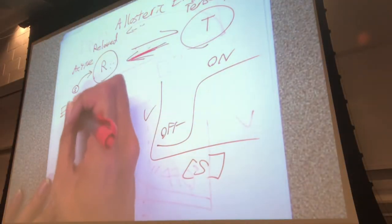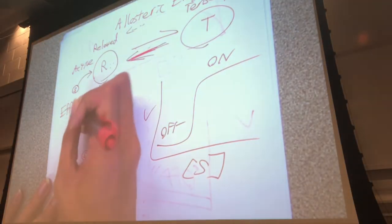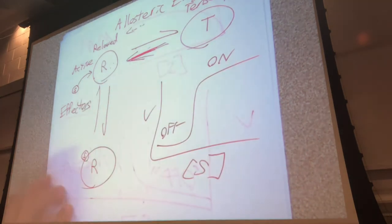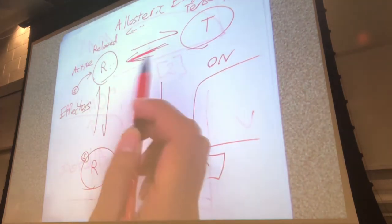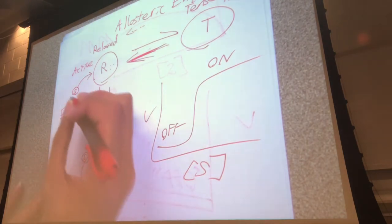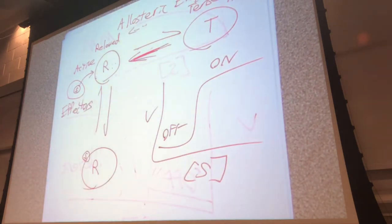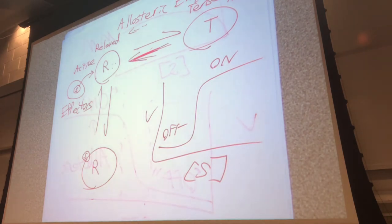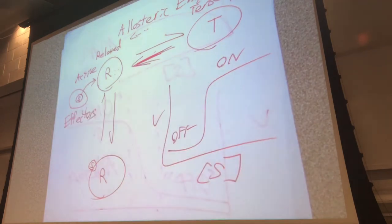Effectors are molecules that affect this equilibrium between relaxed and tense — between active and inactive. The first example of an effector is the substrate itself. There are of course others, and that's what the next diagram shows. I'm going to hand-draw it and then we'll refer back to the diagram.